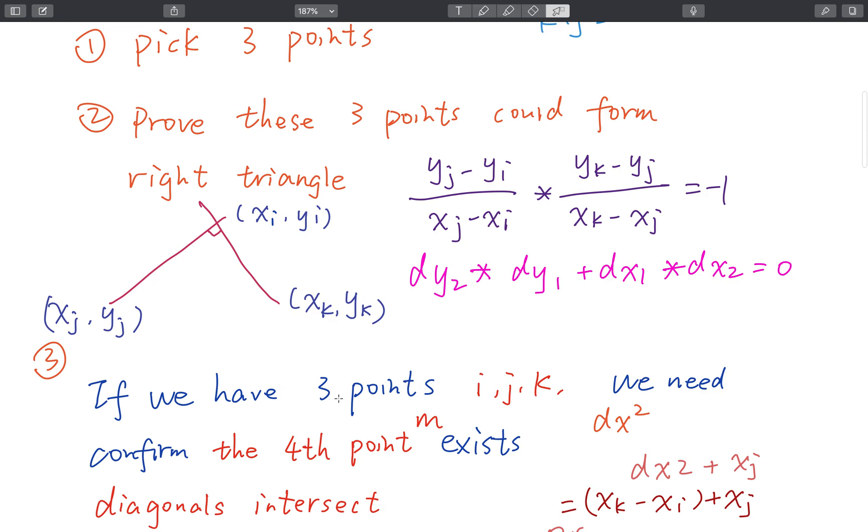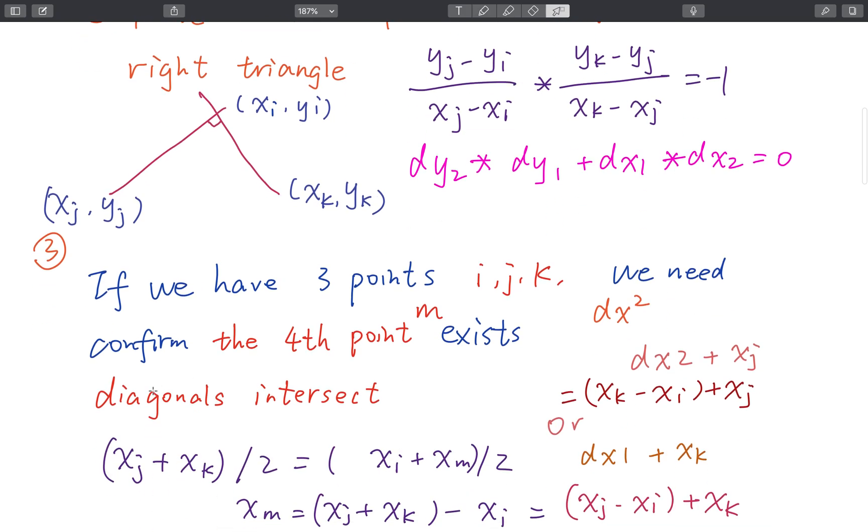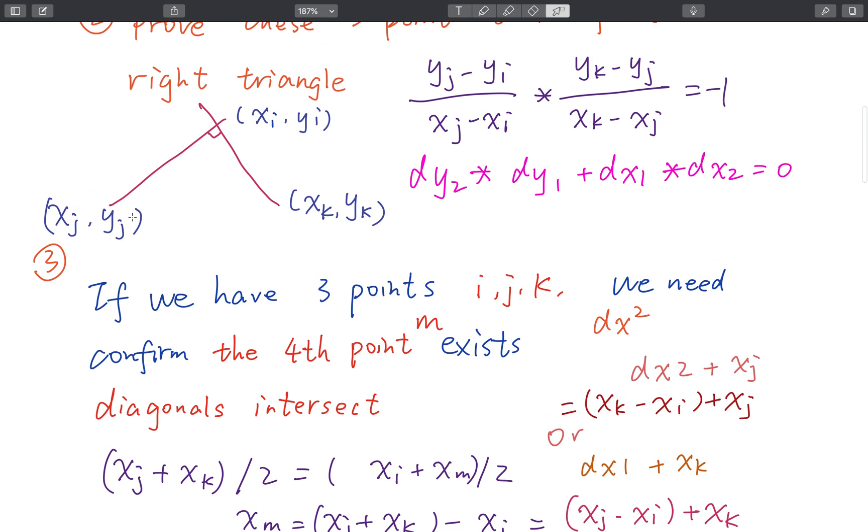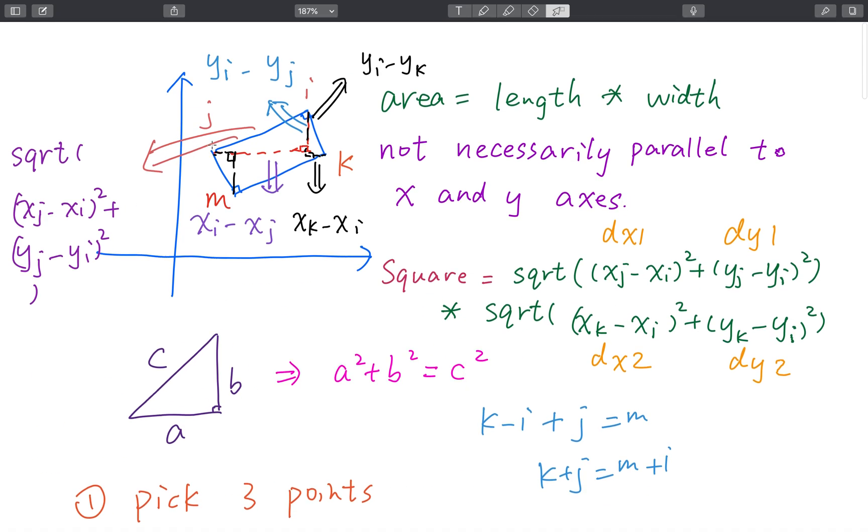Now that we get these three points, we need to try to find the fourth point. This is we should apply the diagonals intersect. That means the middle of these two points should be the same as the middle of these two points.